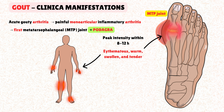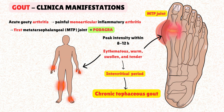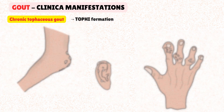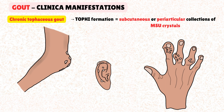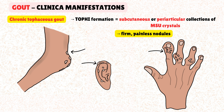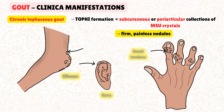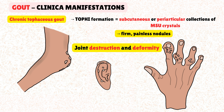Usually, the acute episode is followed by an intercritical period where the patient is asymptomatic. Nevertheless, if left untreated, gout can progress to chronic tophaceous gout. This is characterized by the formation of tophi, which are subcutaneous or periarticular collections of monosodium urate crystals. Tophi appear as firm, painless nodules commonly found on the ears, elbows, or tendons. They can lead to chronic joint destruction and eventually deformity.